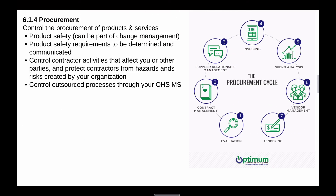Moving into Clause 8.1.4, procurement — here we look at contractors and outsourcing. A significant high-risk area for most businesses is contractor control, because you could have good stringent controls over your own operations, but when contractors come onto site this can be an area of exposure. Through this clause they expect you to look at product safety — not just contractors, but if you're going to procure a substance, an agent, or a new piece of equipment, how is that safety information communicated to the supplier so that when it arrives it has all the relevant required safety devices in place. Product safety requirements should be determined and communicated to suppliers. As part of the procurement process, contractor control also addresses how contractors' activities could affect you, your workers, or other people within the organization.